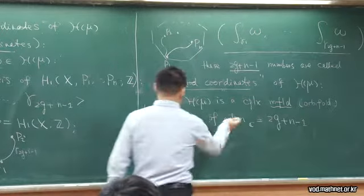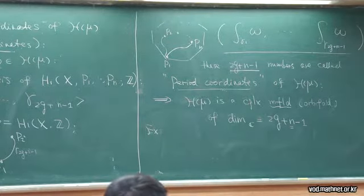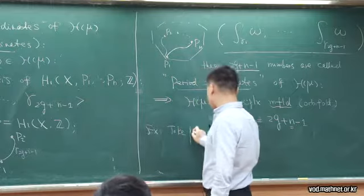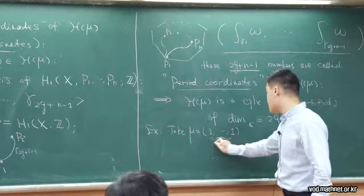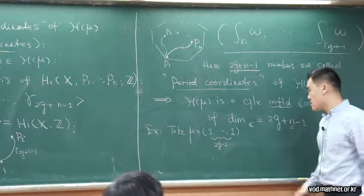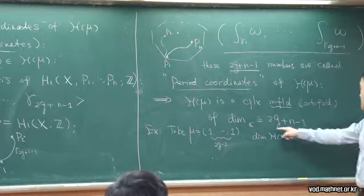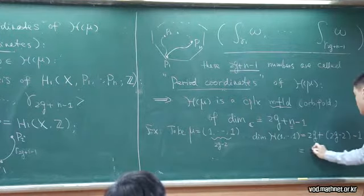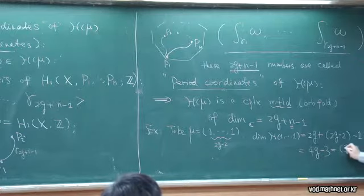Let's check one example to make sure this dimension count is correct. Bear in mind that n comes from the number of entries in the partition, or the number of distinct zeros of omega. Let's take the most general case: μ equal to the partition (1,1,...,1). Because they sum up to 2g−2, the number of entries in this case is 2g−2. According to the dimension formula, the dimension of the corresponding strata is 2g+(2g−2)−1 = 4g−3.